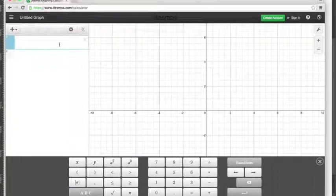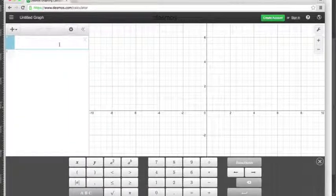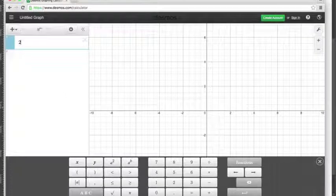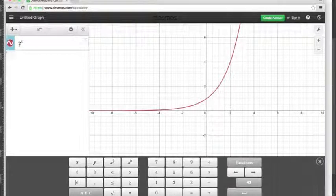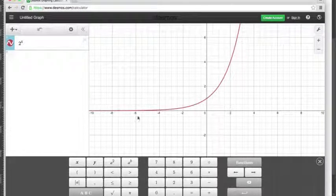Remember exponential function is in the form of y equals a to the X, so a is going to be our constant. Let's say a is 2 and we have our variable to the X, so this is y equals 2 to the X.